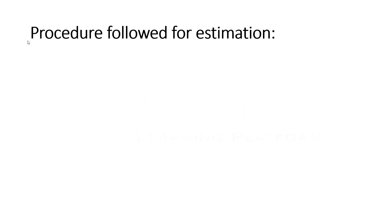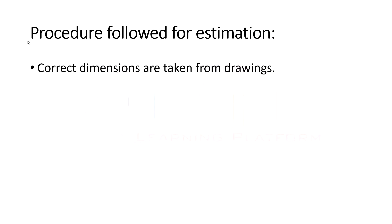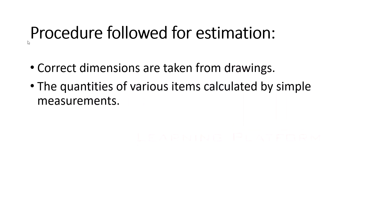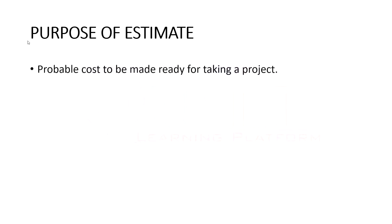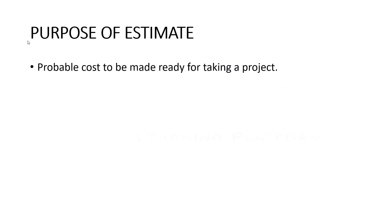The procedure followed for estimation: first, the correct dimensions are taken from the drawing that has been drawn before construction. The quantities of various items are calculated by simple measurements, and these quantities are used to find the cost.